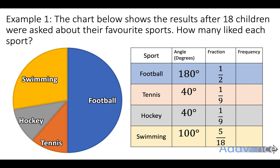Now to find the frequency, we realize there are 18 children. We do one half times 18, which is 9. One ninth times 18 is 2. One ninth times 18 is 2. And 5 eighteenths times 18 is 5. I have a video on fractions of numbers, so if you can't remember you can watch that video - I'll link it in the top corner.